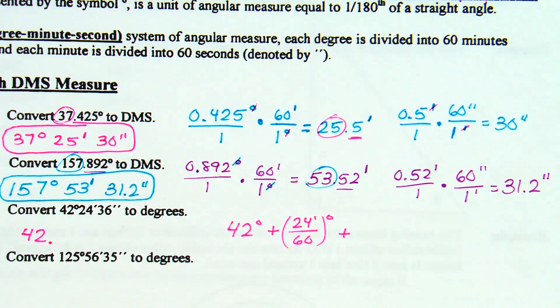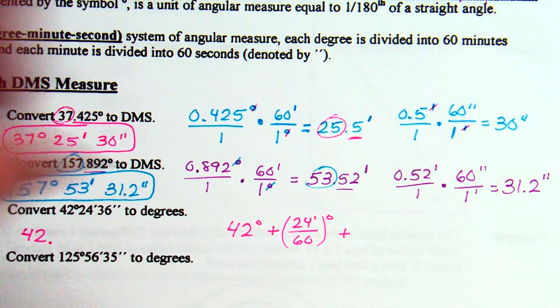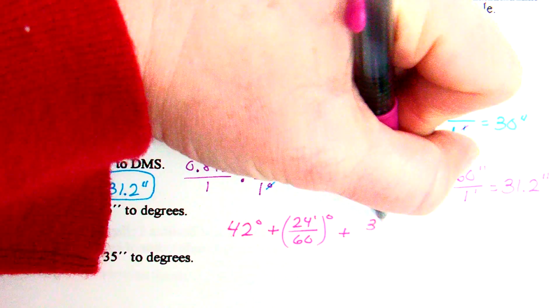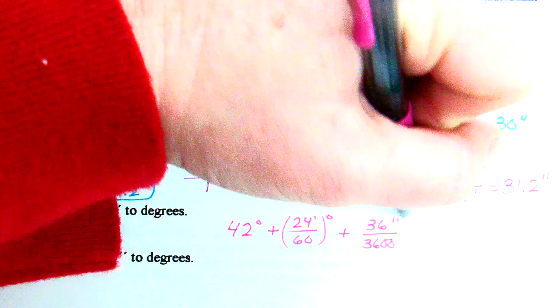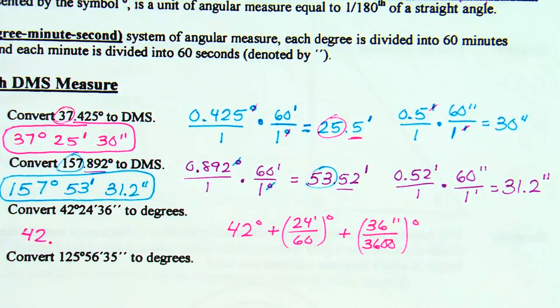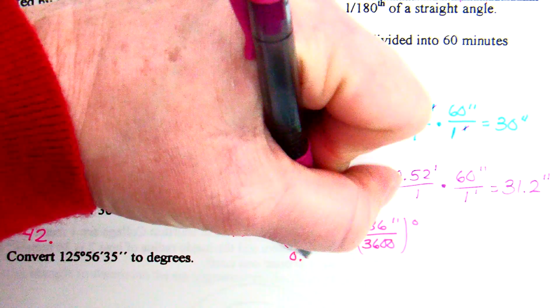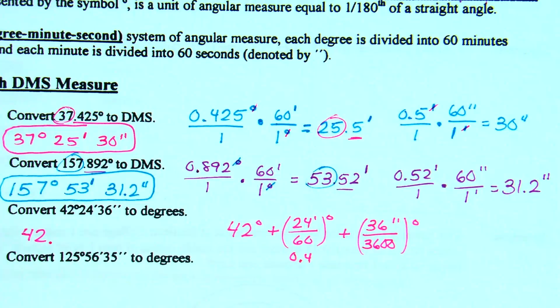Divided by 60 twice. It's not 60 plus 60. It's 60 squared, or in other words, 3,600. So I'm going to take the 36 seconds and divide by 3,600. If you would rather say 60 squared, you can. So what is 24 divided by 60? 0.4. What is 36 divided by 3,600? 0.01. So if we have 42 degrees, plus the 4 tenths, plus the 1 hundredths, what am I at? 42.41 degrees.